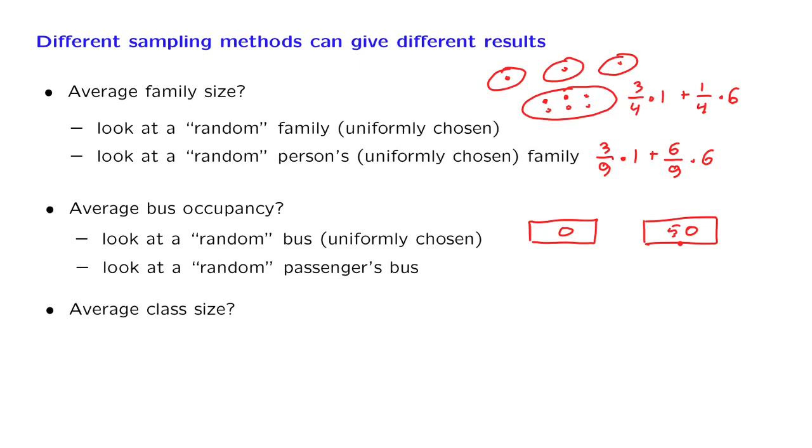The moral from all these examples is that it is very important to be careful about what you choose to sample. When you pick at random, what exactly are you picking at random? And you need to be aware that different sampling methods measure different things and will generally give you different results.